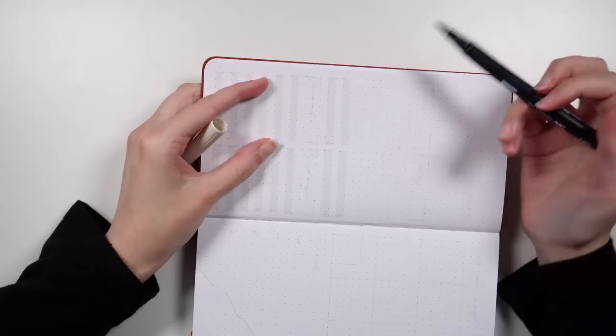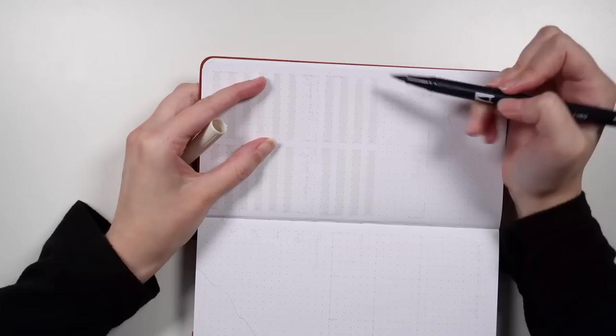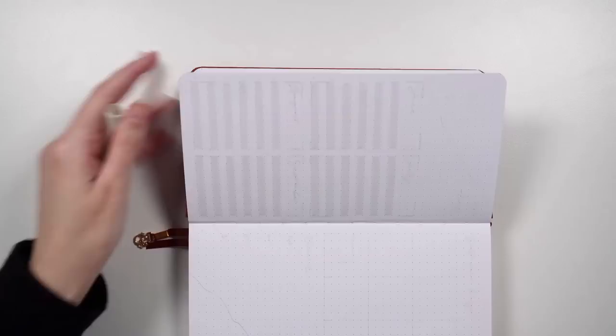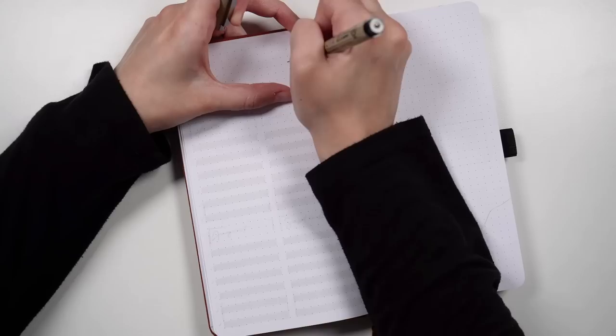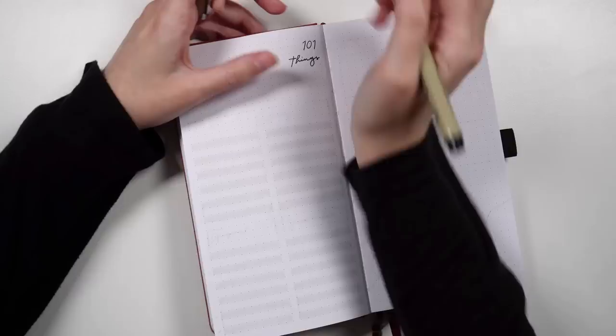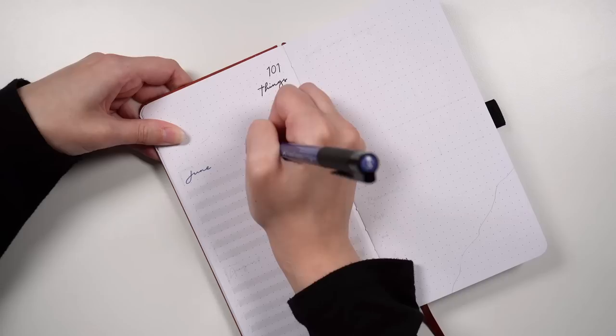If you haven't come across it before, a 101 things list is just 101 things that you want to get done in a certain period of time. For me, that is the year of 2023. So 101 things that I want to achieve or try or accomplish this year. In this journal, I am not going to be writing out the full list. This is just for assigning particular things to particular months.